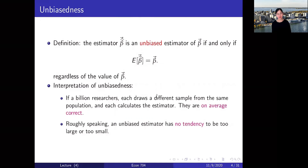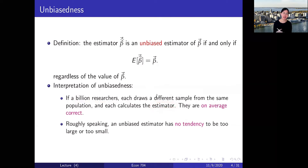How do you interpret unbiasedness? From a frequentist point of view, it means that if a very large number of researchers each draw a different sample from the same population and calculate this estimator, their average should equal the true value — they should be on average correct. Roughly speaking, an unbiased estimator has no tendency to be too large or too small.